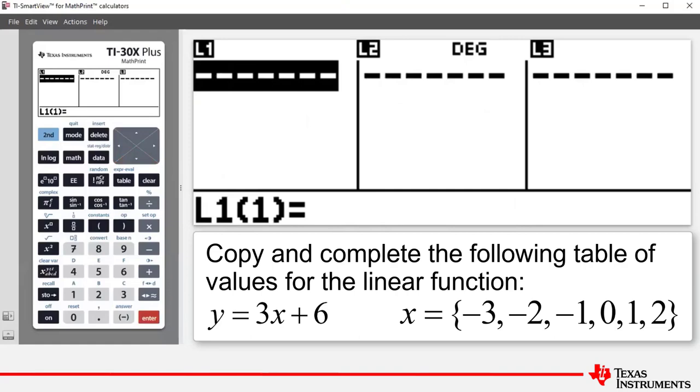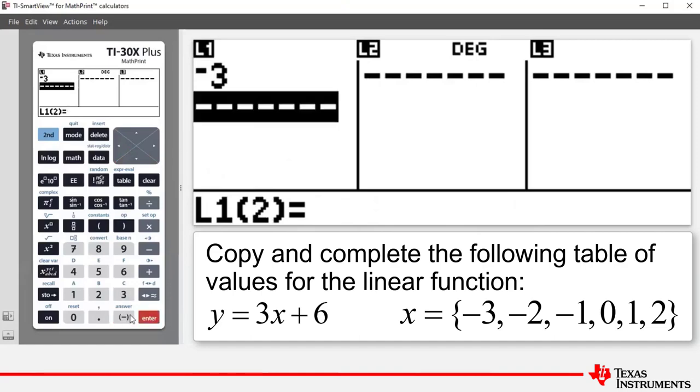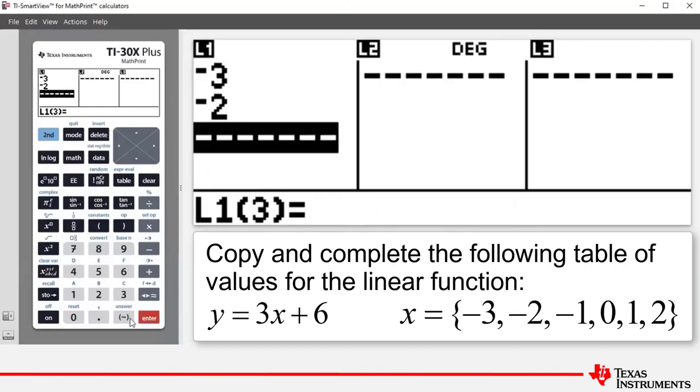Now, what we're going to do is enter the x values into list 1 or L1. And so we're going to start with negative 3. And remember, when you're entering a negative number, use the negation key and then press Enter. Then we're going to enter negative 2, Enter, negative 1, Enter.